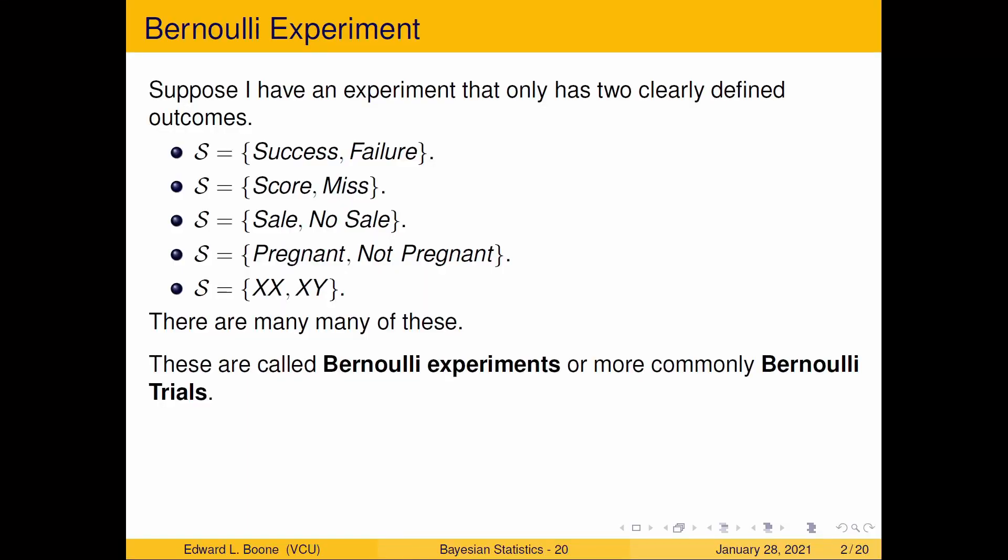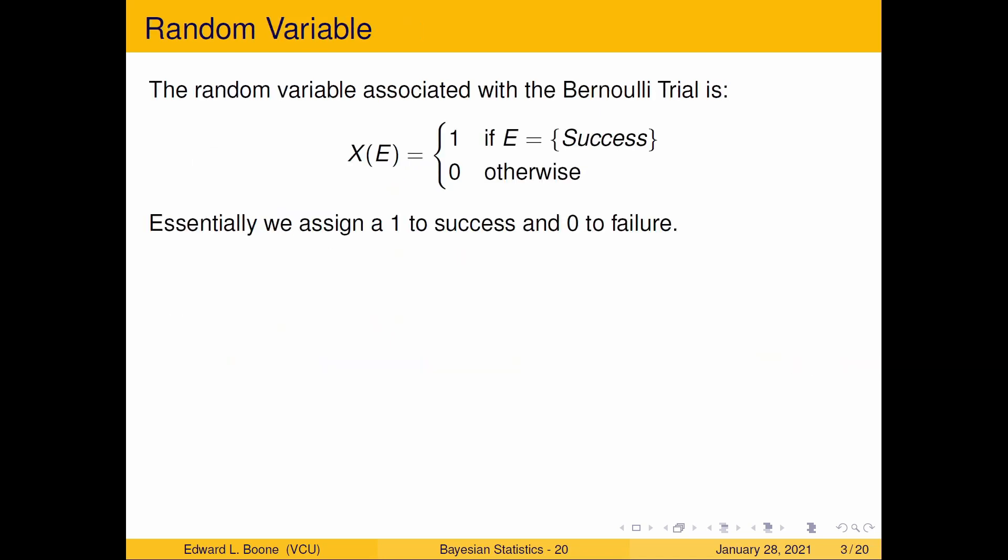Welcome to the posterior distribution for the Bernoulli experiment. We're going to look really quick at the Bernoulli experiment again. We've covered it in the last couple of videos, but we're going to keep cranking with it. Remember, there's two possible outcomes in our sample space, and the random variable is one if it's a success, whatever which one we define that to be, and we assign one to success, zero to failure.